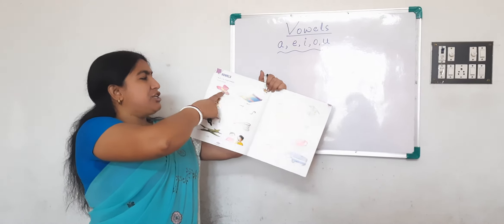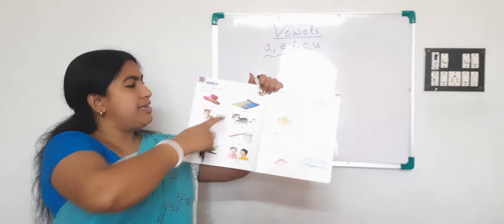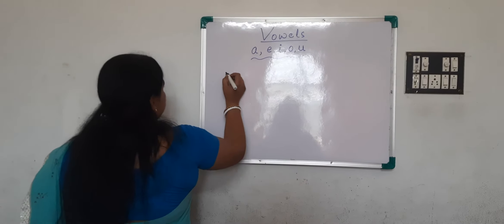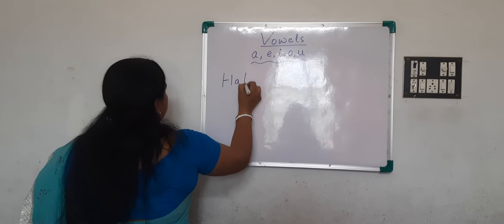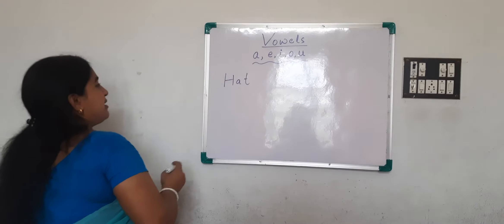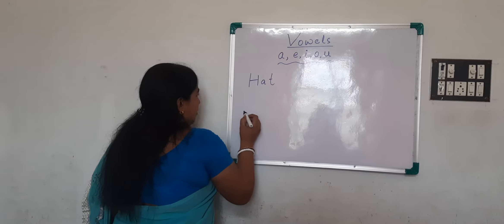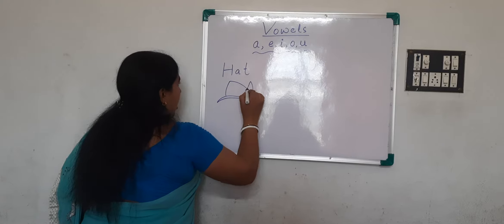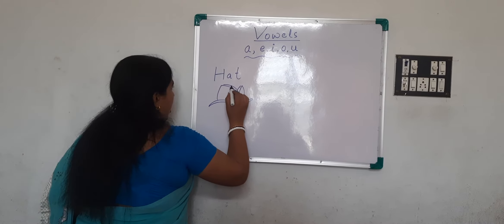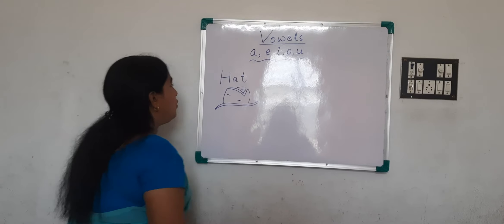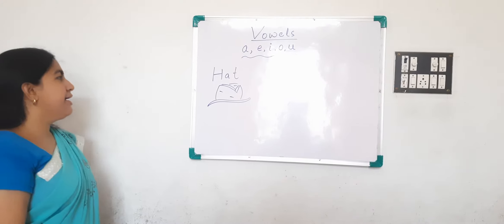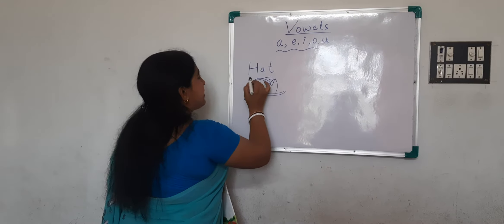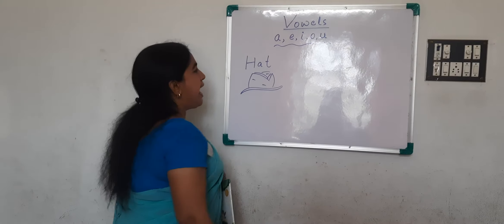Now, the first picture. Can you guess the picture? What is this? Yes, it is a hat. All of you wear a hat on your head. What is the spelling of hat? H-A-T. Hat. So where do you wear a hat? On your head. The spelling of hat is H-A-T.